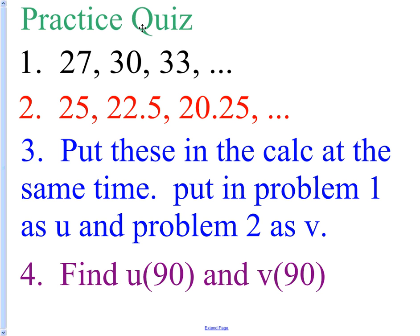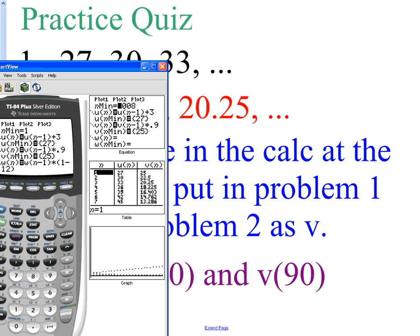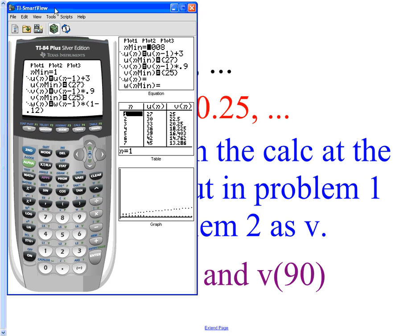When you get to number three, it says put these in the calculator at the same time. Put in problem one as U and problem two as V. Now, you may not know what that's talking about. Everybody grab your calculator for a second. Go to the Y equals screen.